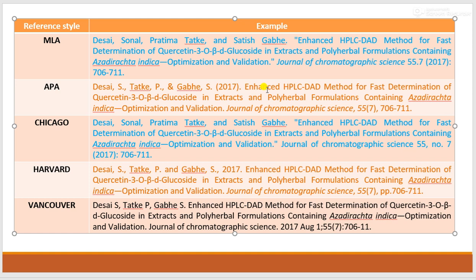In APA style, the reference starts with the surname, then the abbreviated given name, followed by the year of publication in brackets, then the title of the paper, then the journal name in italics, then the volume number, issue number, and page number. APA and Harvard are almost similar; the difference is that in Harvard the year of publication is not in brackets, and they additionally use 'PP' to denote the page number.